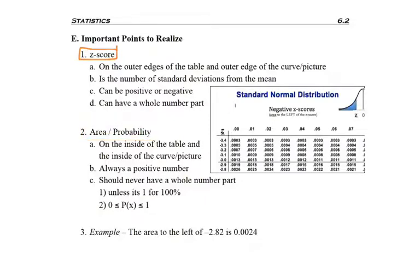In terms of the z-score, it's a number on the outer edge, specifically of the table and the picture or curve. Here is my z. These numbers going down the left in conjunction with these numbers on the top, those are z-scores.